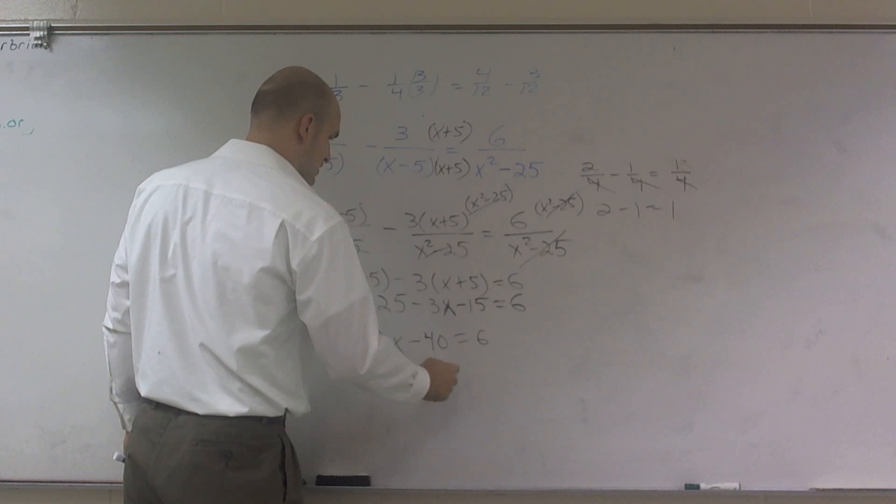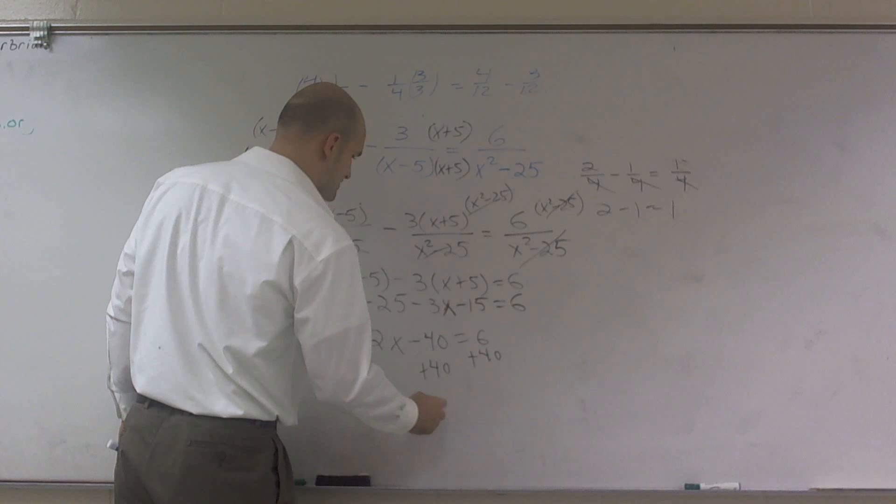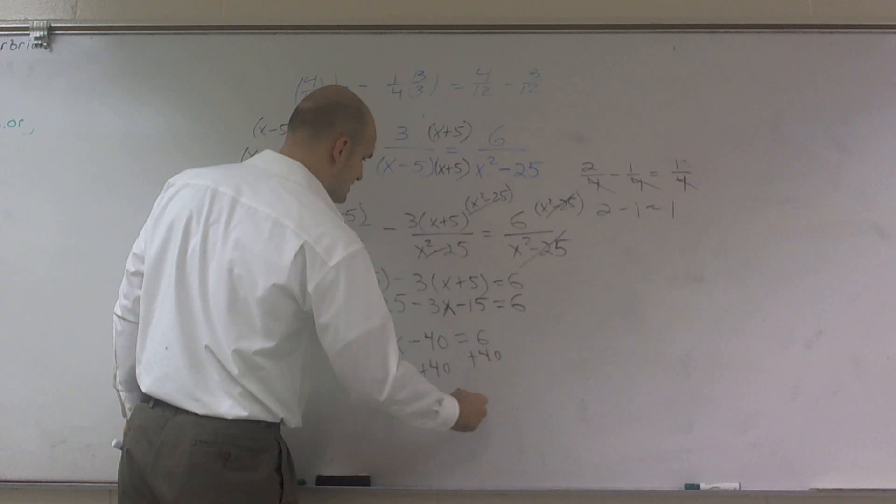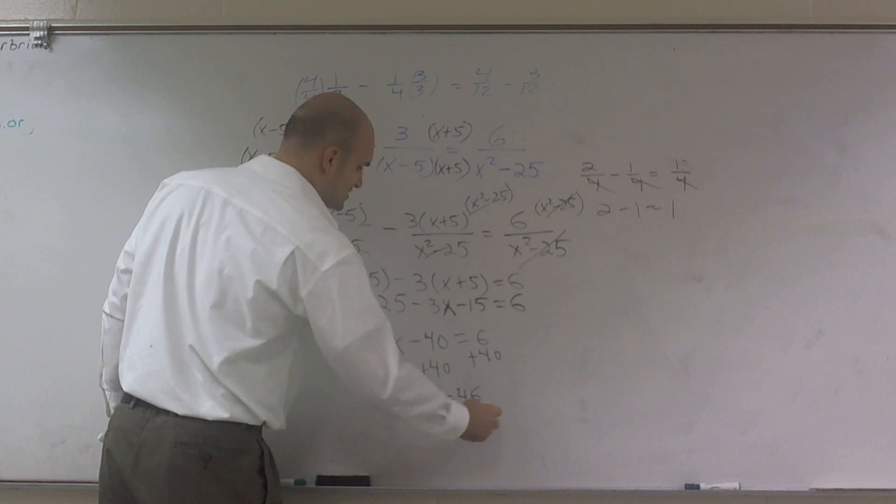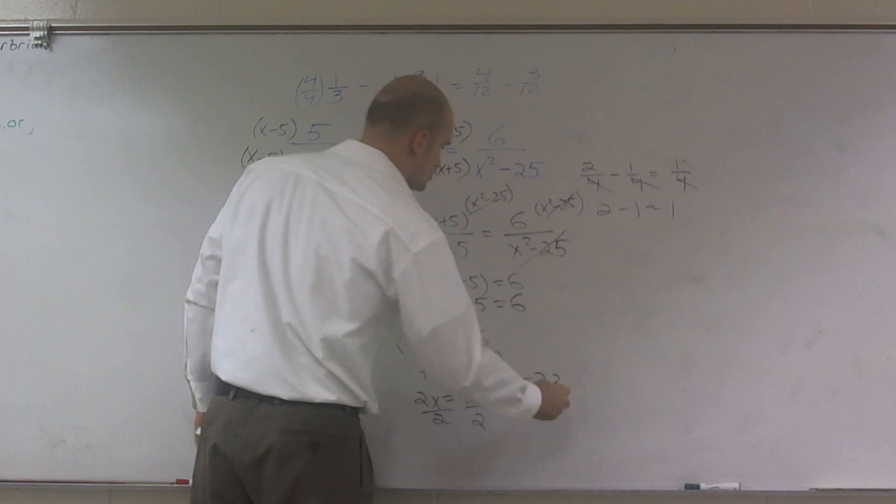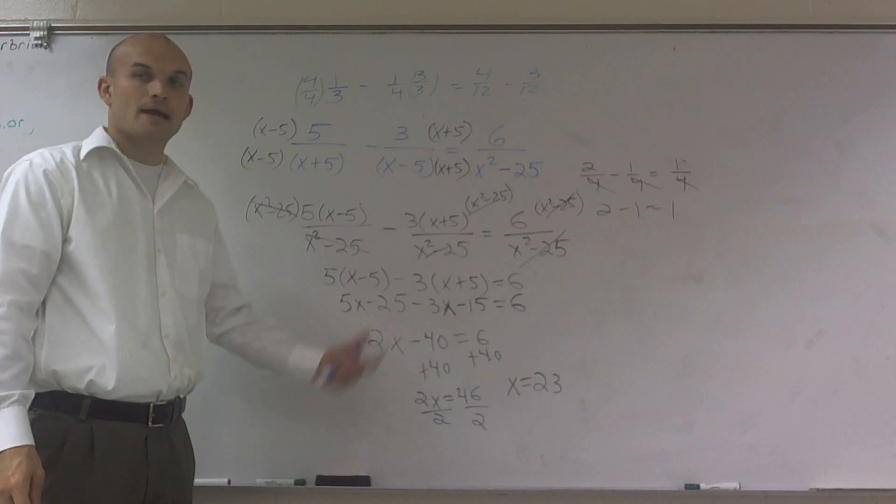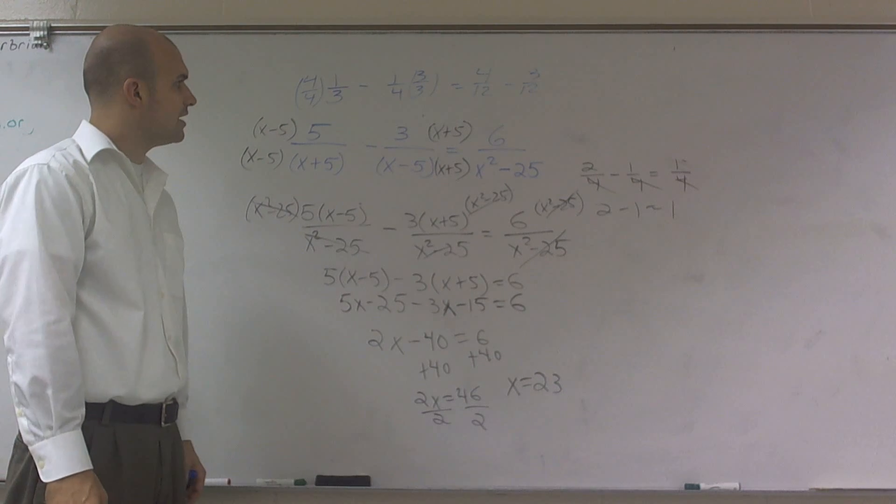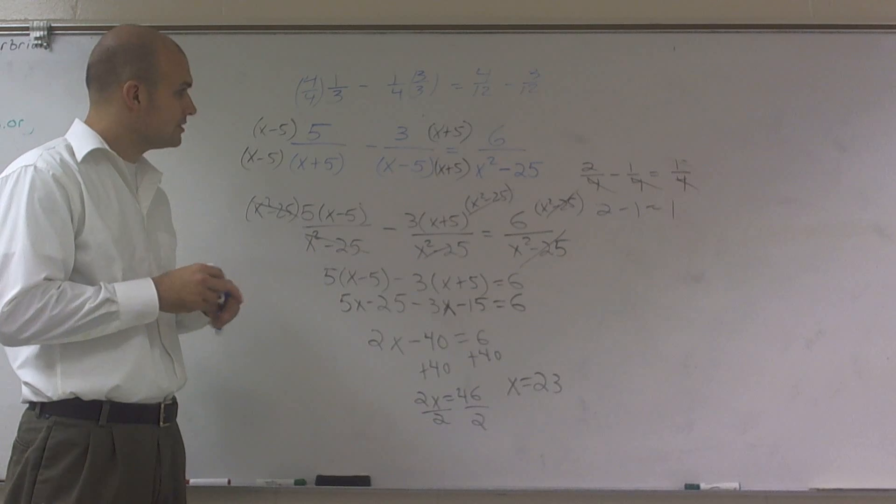I'll add 40 to both sides. And what I obtain is 2x equals 46 divided by 2, x equals 23. And there you go. That's how you solve that problem given rational expressions.